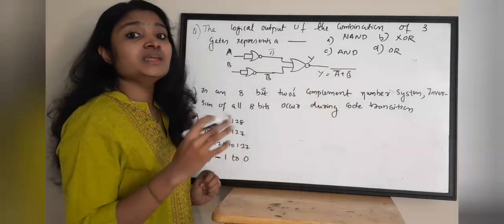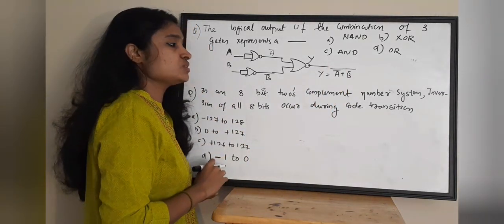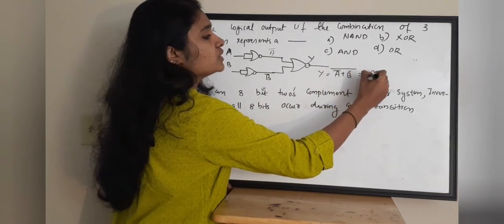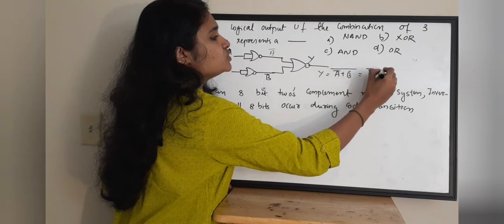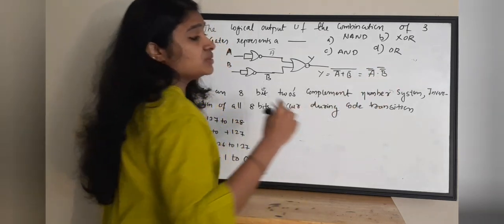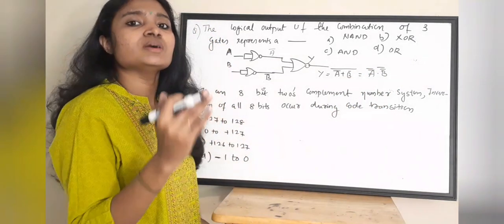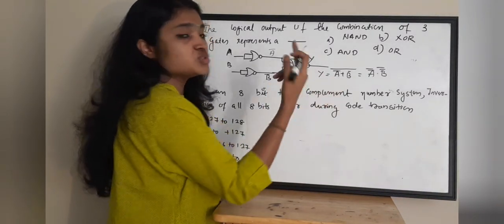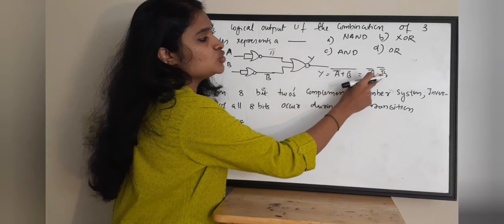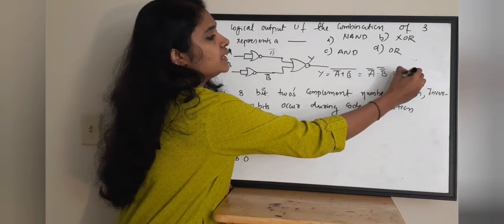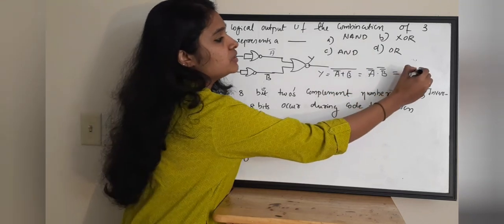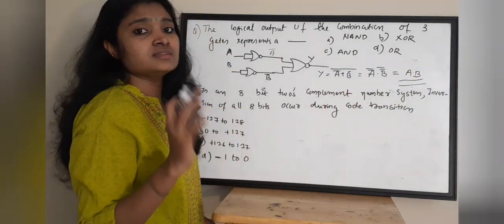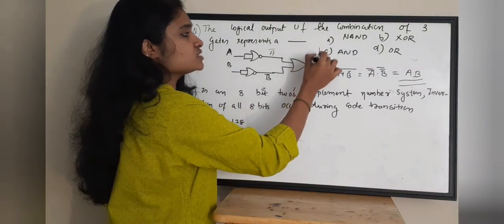Now apply De Morgan's law. De Morgan's law states that (A + B) bar equals A bar · B bar. Here the inputs are A bar and B bar, so we get A double bar · B double bar. A double bar equals A and B double bar equals B, giving A · B. This is an AND gate, so the correct answer is option C.